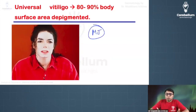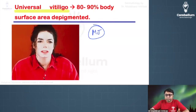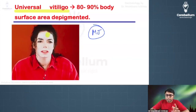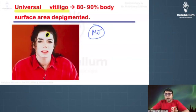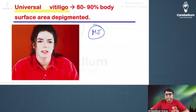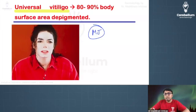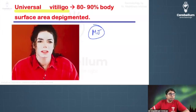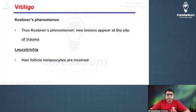Michael Jackson, the king of pop, had universal vitiligo. In universal vitiligo, only one or two patches of normal skin remain over the body. If treated, the remaining normal skin can be removed to make the skin completely white — there are treatments to depigment those remaining normal areas.